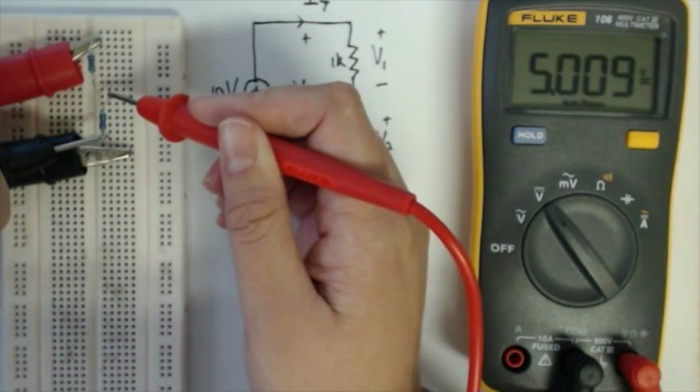We can now measure V1 and V2 as well. Here is V1 and here is V2. You can see that they are also very close to our expected values. So we have confirmation that we built our circuits correctly.